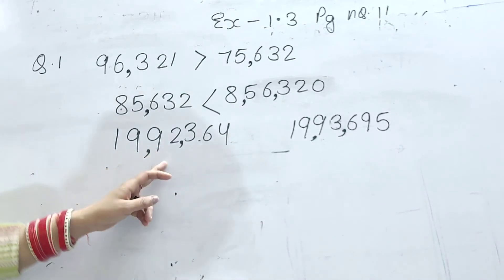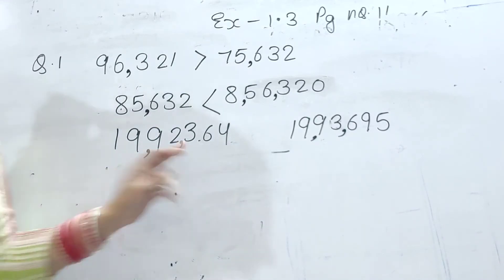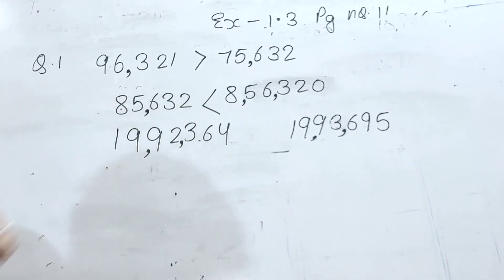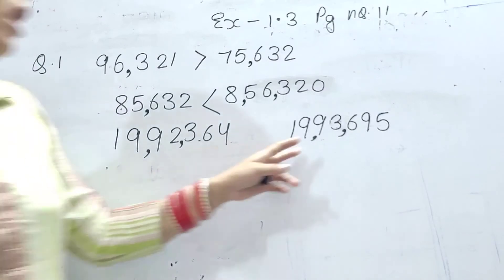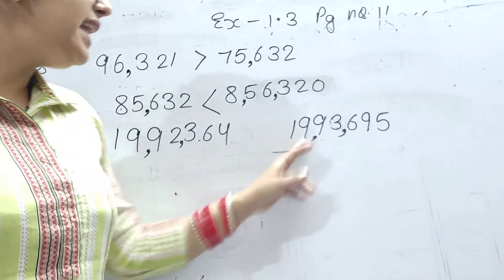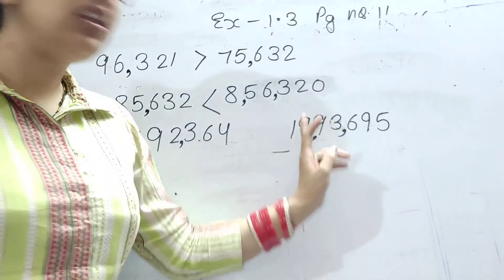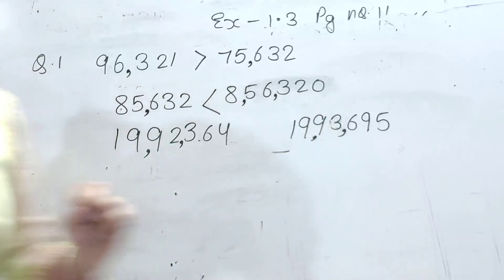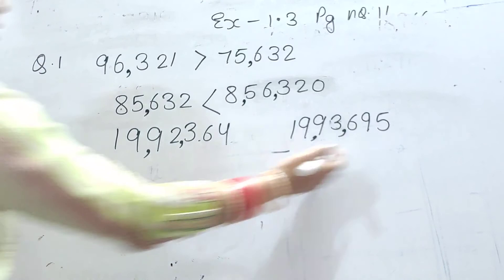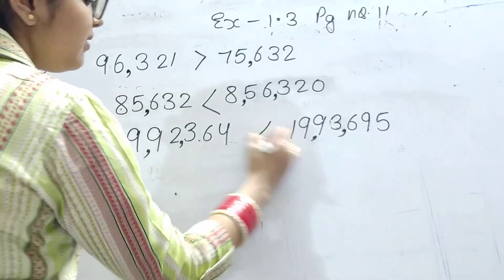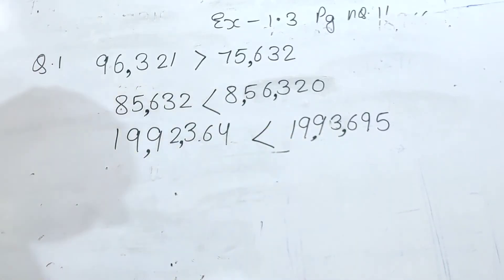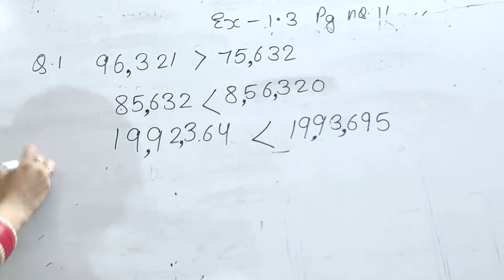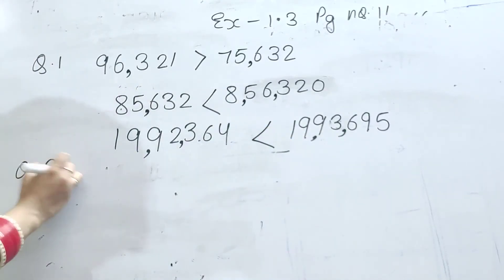Nineteen lakh, ninety-two thousand, three hundred and sixty-four. Aur nineteen lakh, ninety-three thousand, six hundred and ninety-five. Which one is greater? The second one is greater. Phir hai question number two.